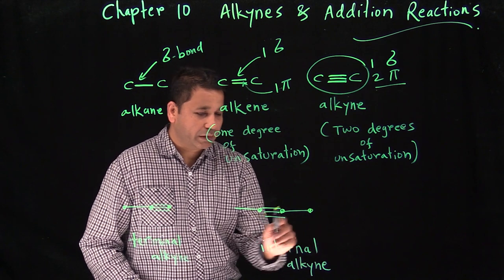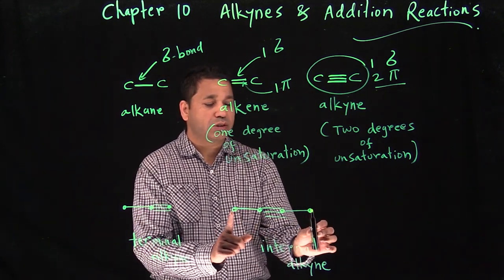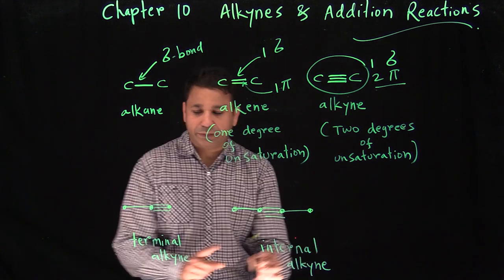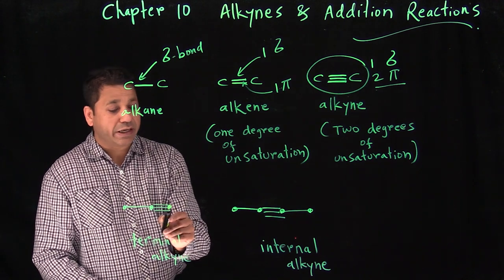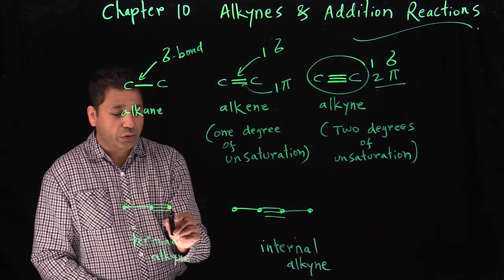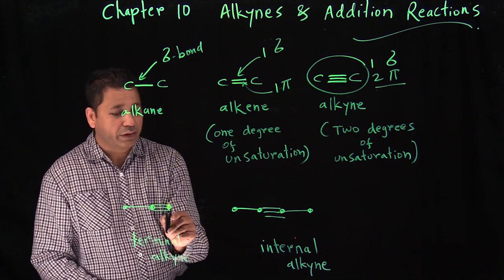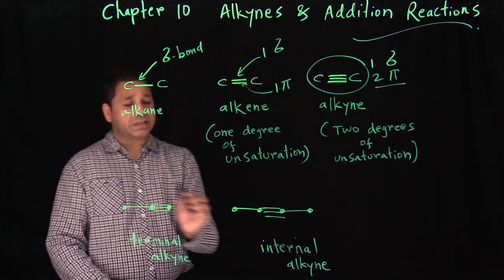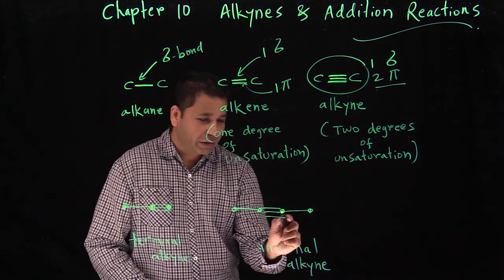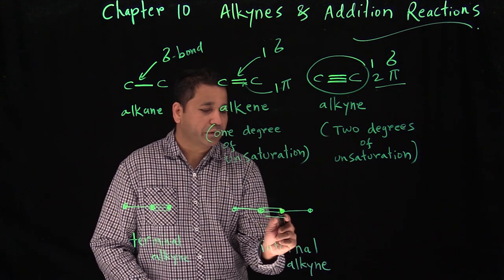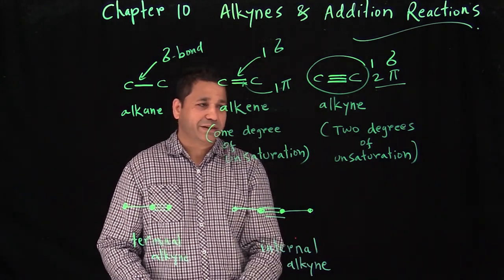For an internal alkyne, carbon one is on either end, and you can see it has two carbons on each side. For a terminal alkyne, you start with the triple bond. The two carbons of the triple bond are here, and then you have additional carbons extending from there.